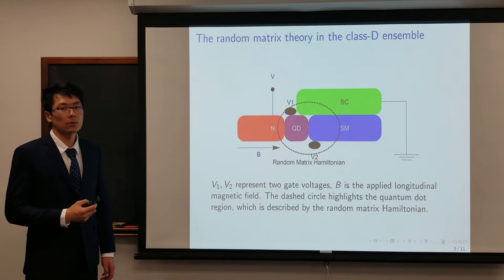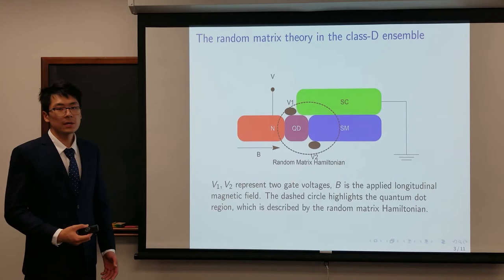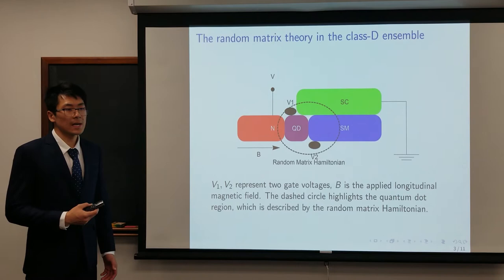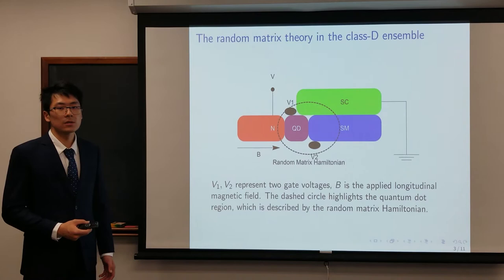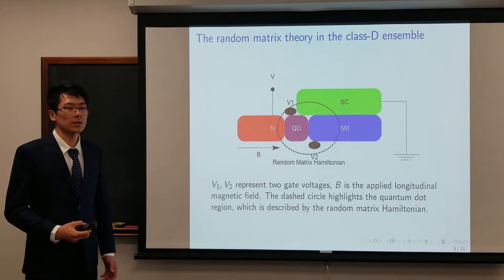We start off with random matrix theory in a class-D ensemble, which only requires particle-hole symmetry. This should be very generic in principle. The reason we consider a random matrix is because we all know that a semiconductor covered by a superconductor has many unknown disorders, and it's really hard to find an exact model that matches every aspect in a real sample. Let alone, there are so many gate voltages which make complex contributions to the band structure and chemical potential in a nanowire. Therefore, the random matrix may be a useful tool to describe the statistical features in such a highly disordered system.